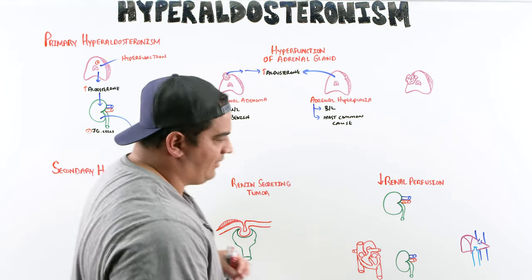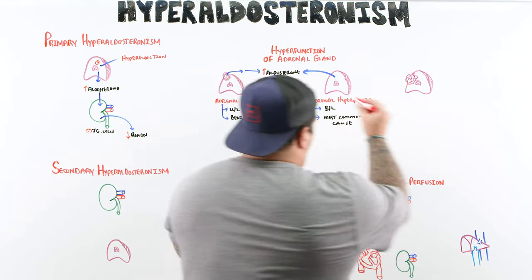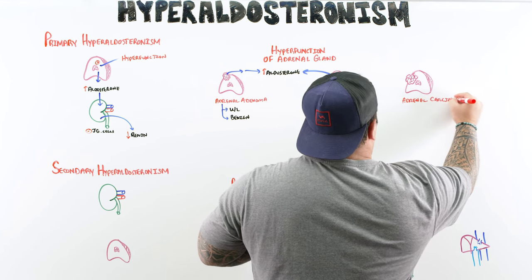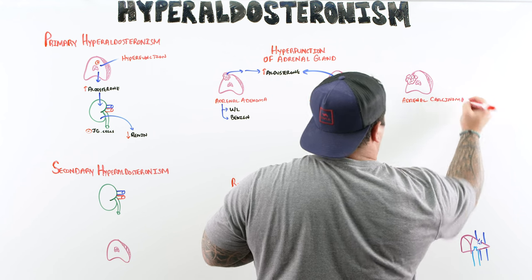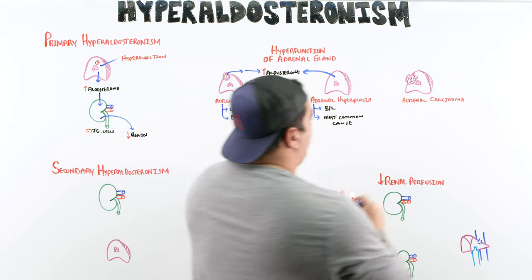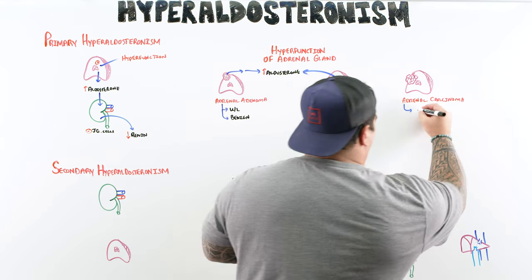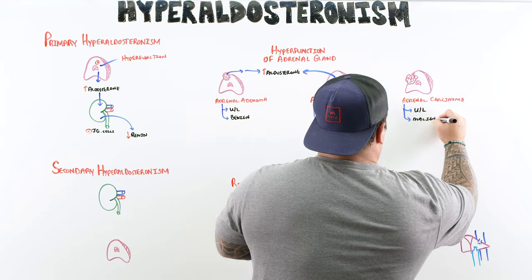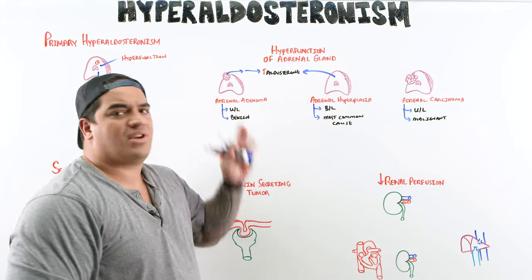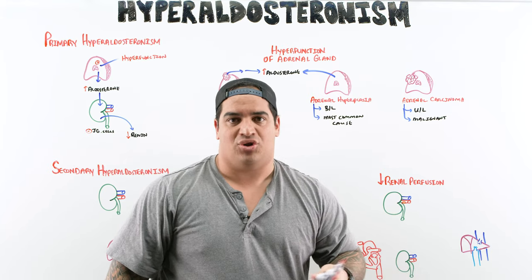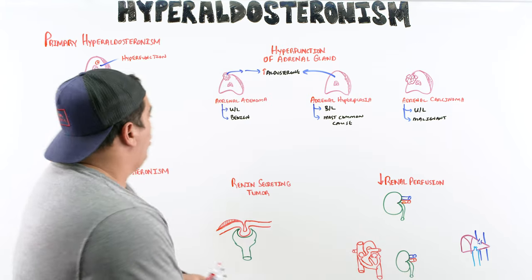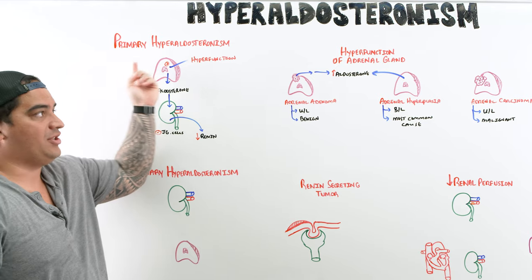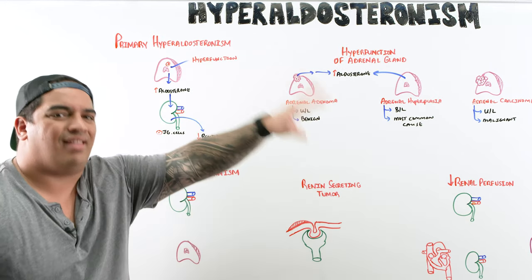Either way, this tissue is leading to an increased production of aldosterone. The least common cause of a hyperfunctioning adrenal gland is adrenal carcinoma. This is also usually unilateral, but unlike adrenal adenoma, it tends to appear more calcified, more irregular on imaging, and is more malignant. So adrenal adenoma and adrenal hyperplasia are the two most common causes; adrenal carcinoma is a very uncommon cause of hyperaldosteronism.